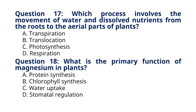Question 17. Which process involves the movement of water and dissolved nutrients from the roots to the aerial parts of plants? A. Transpiration. B. Translocation. C. Photosynthesis. D. Respiration. The correct answer to question 17 is option B. Translocation.